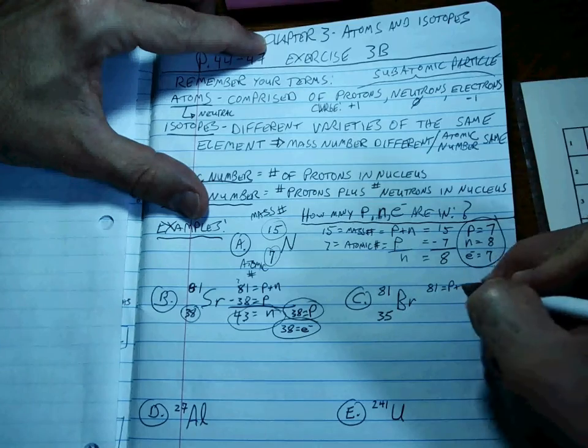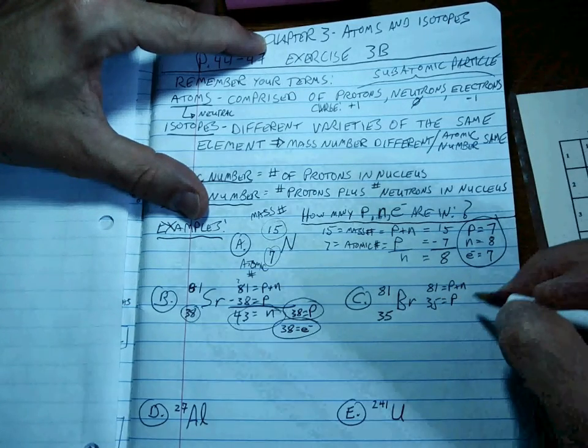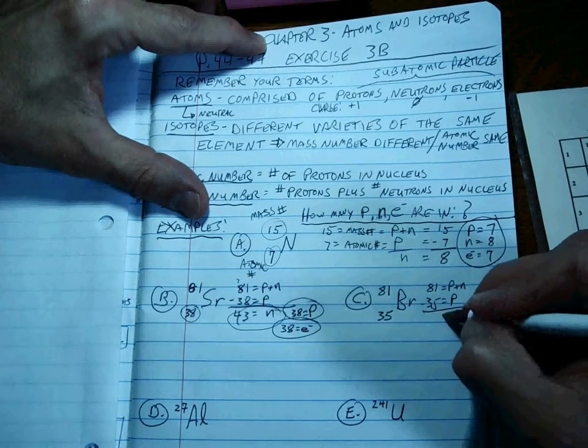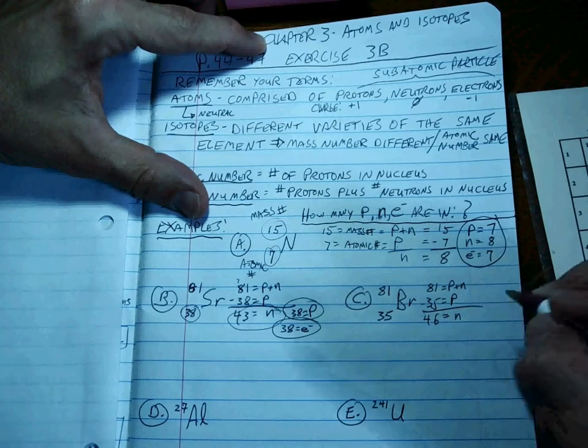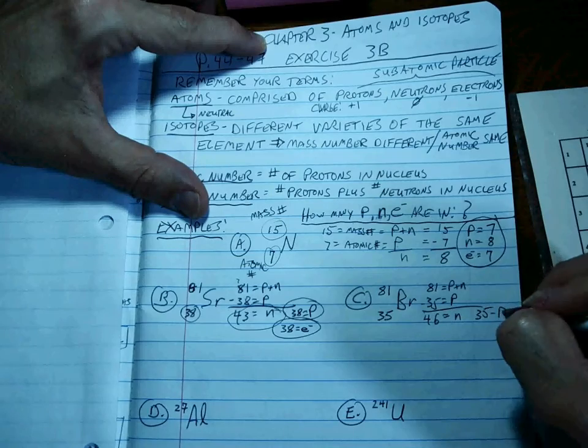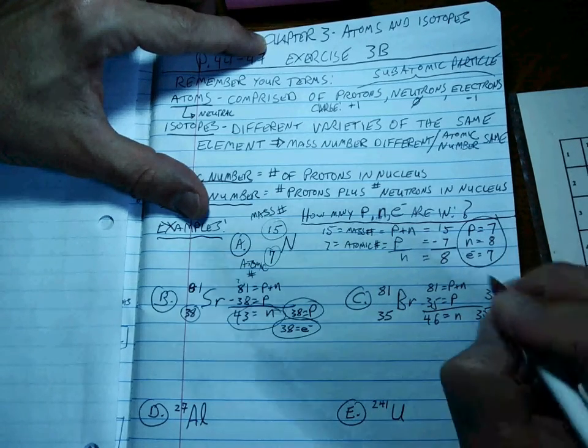Okay. So, Br is the elemental symbol. And then the rest, we do exactly the same way. 81 is the protons plus the neutrons. 35 is the protons. We subtract the two to get the neutrons. That's 46 neutrons, 35 protons, 35 electrons, because it's a neutral atom.